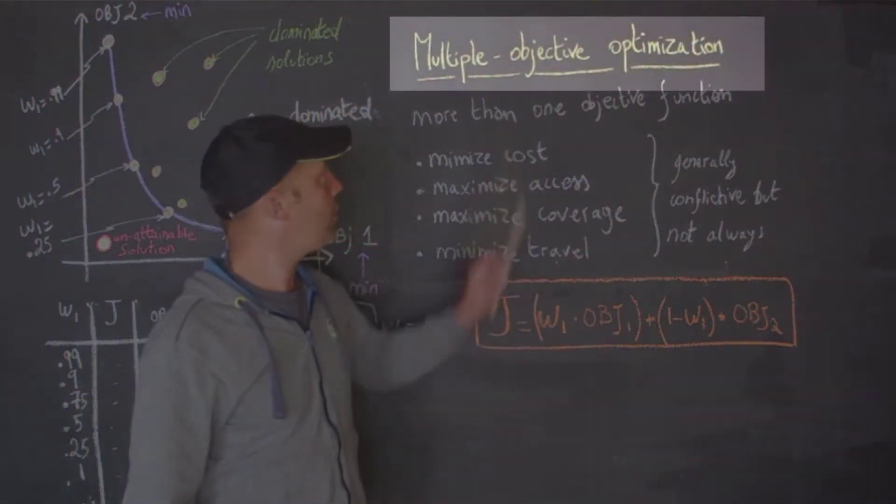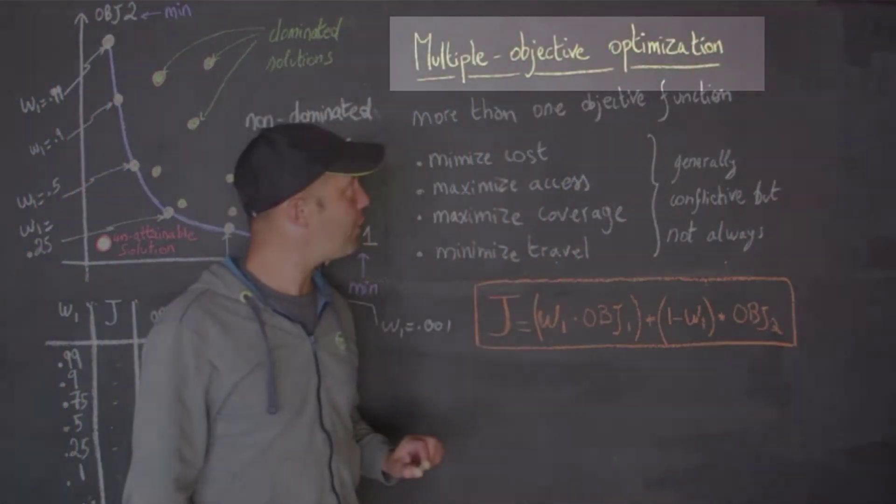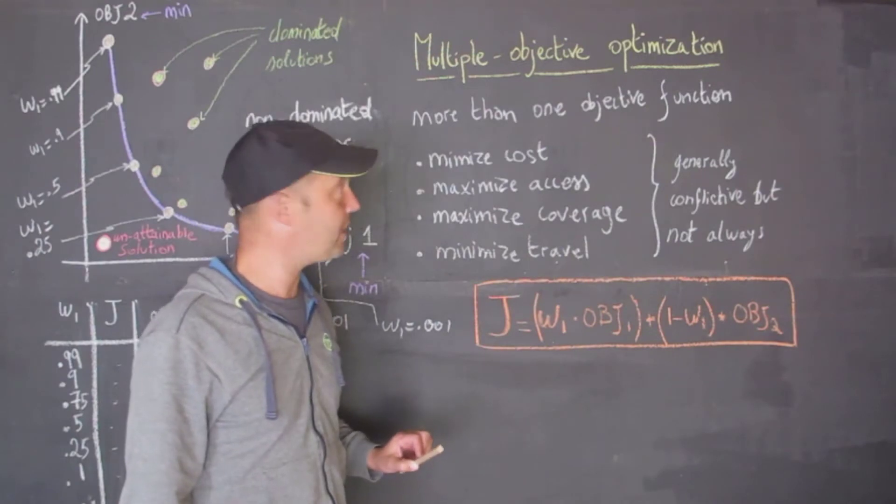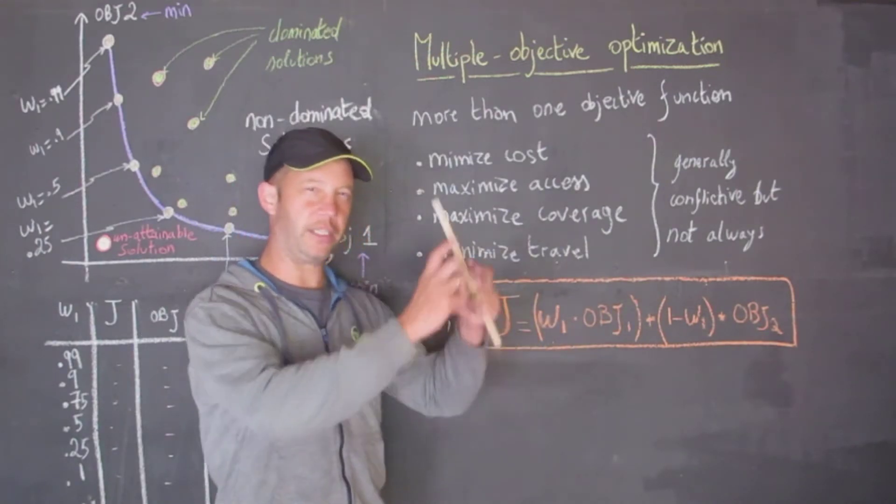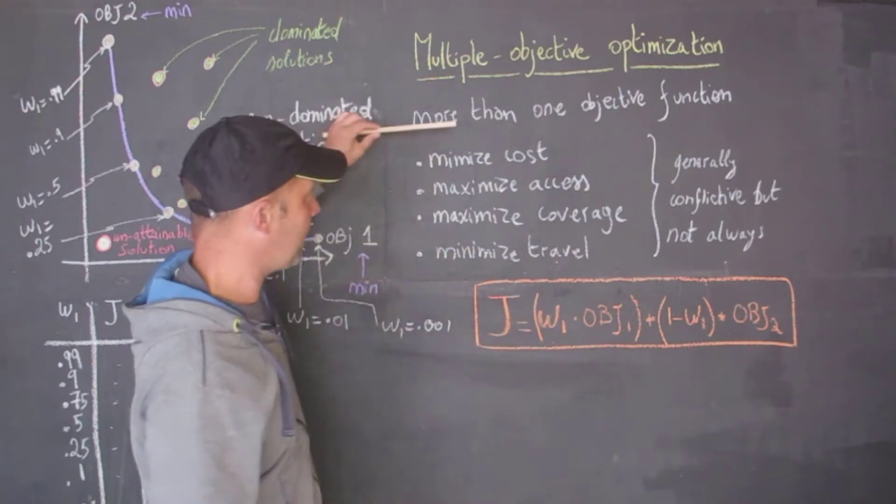Today I am talking about multiple objective optimization. This is a very important topic in spatial optimization. So far we have seen a lot of examples where there is only a single objective, but there are cases where there might be more than one objective.